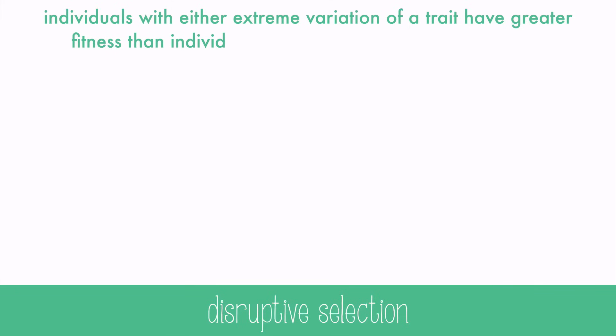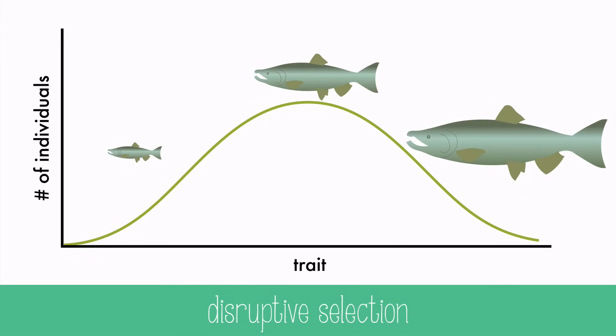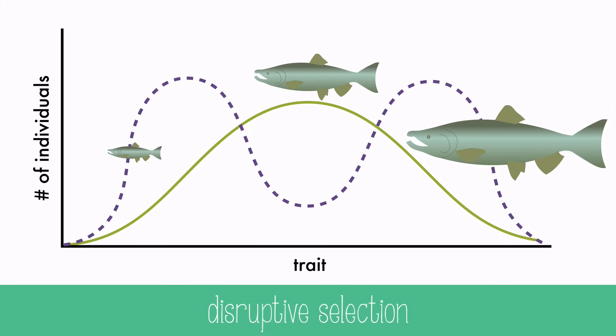In disruptive selection, individuals with either extreme variation of a trait have greater fitness than individuals with the average form of the trait. For example, Chinook salmon males compete with each other to fertilize the female eggs. Large fish have an advantage because they're strong fighters. Smaller fish also have an advantage because they can sneak in while the large fish are fighting and fertilize the eggs without being seen. Medium fish aren't big enough to fight and win, and they're too big to sneak in without getting caught. So it pays to be extreme in this case.